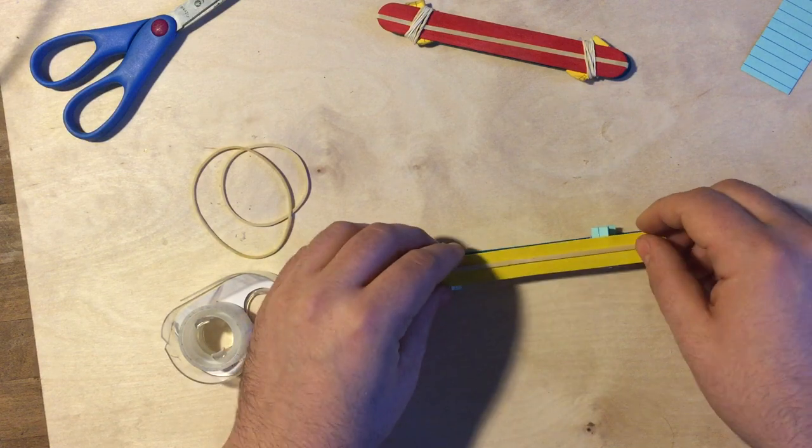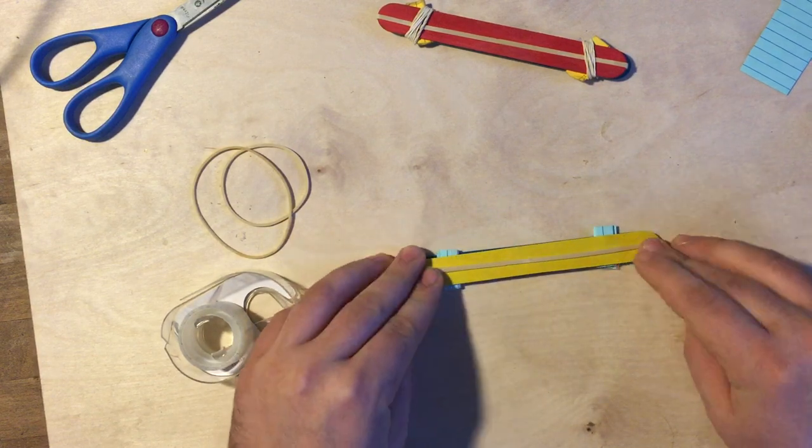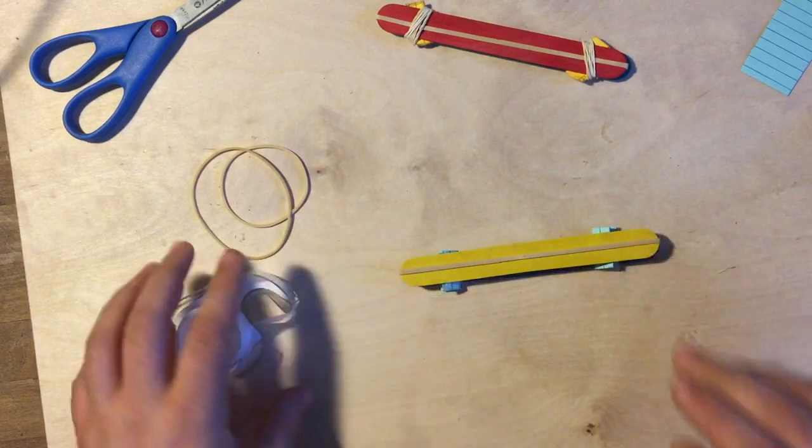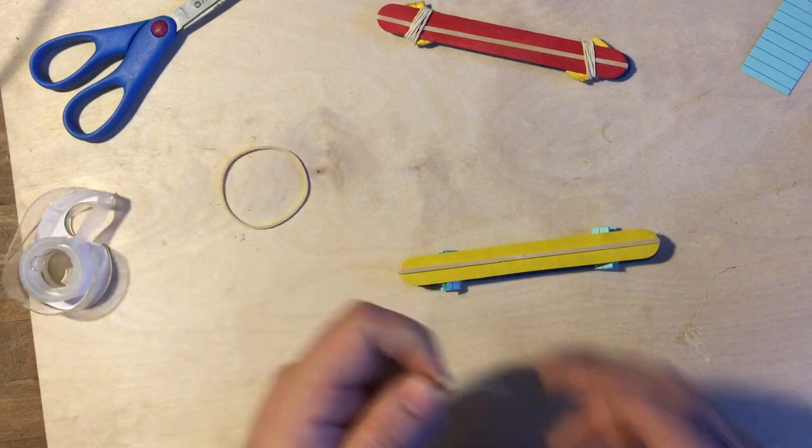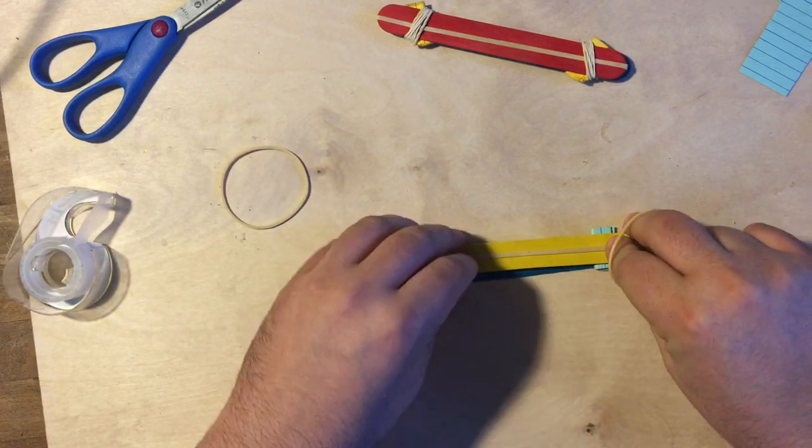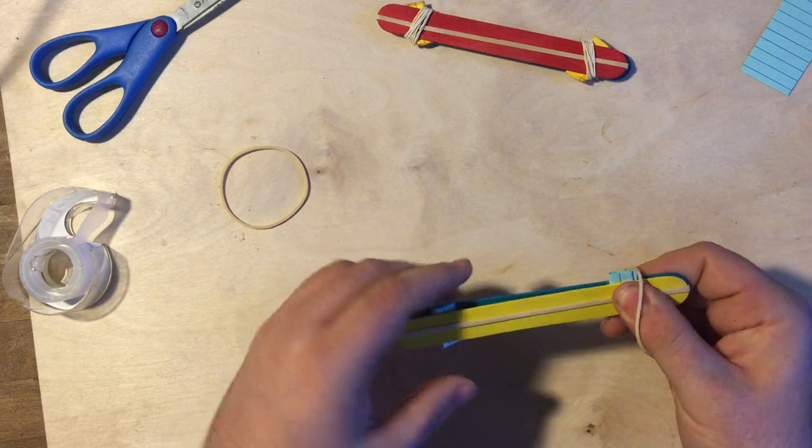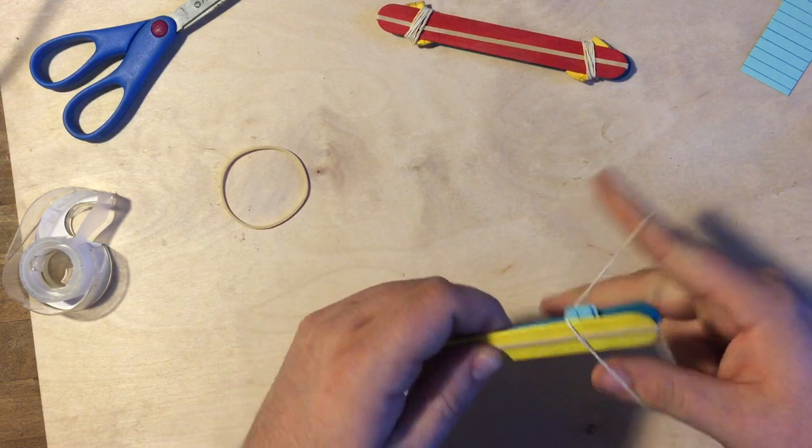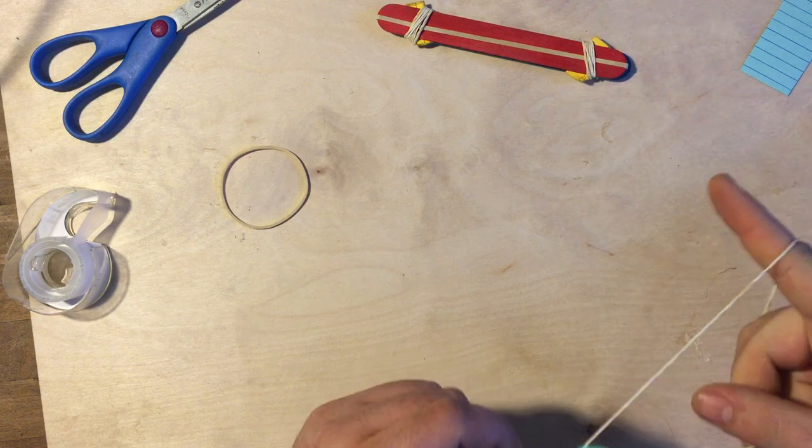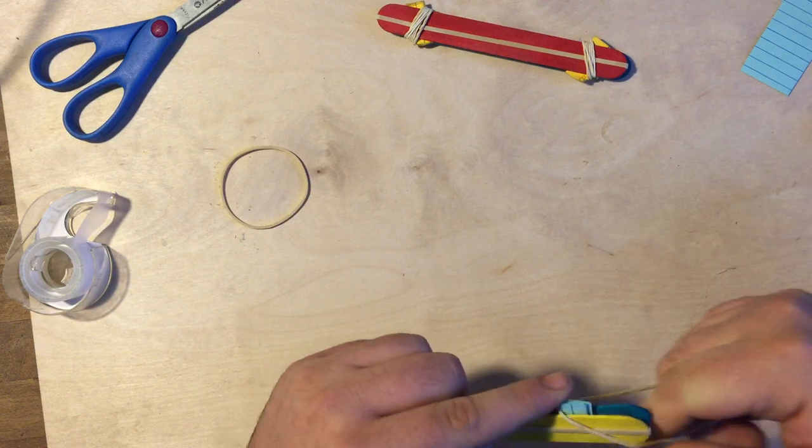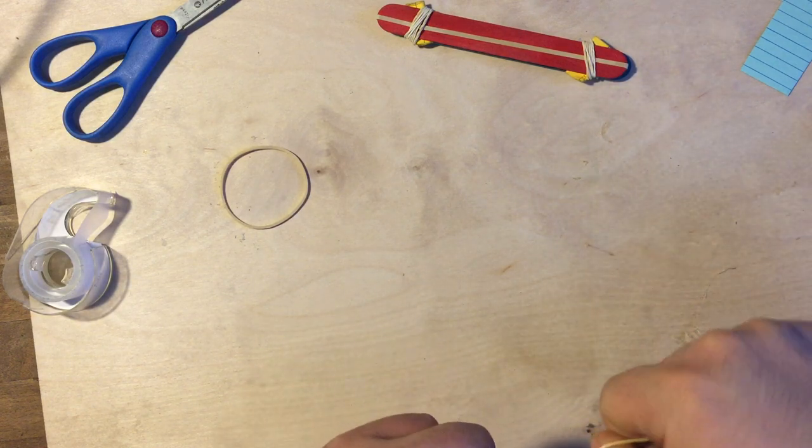Now I'm going to take my two folded pieces of index card and place them right on top. One, two. Like so. Now I'm going to take this other Popsicle Stick with the first rubber band on it and place it on top.